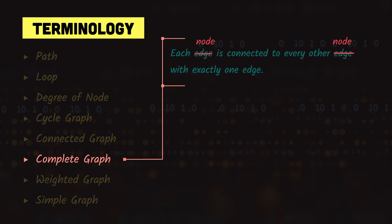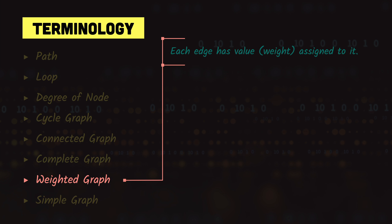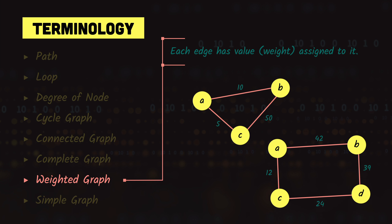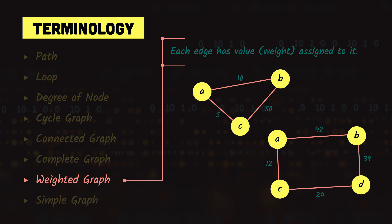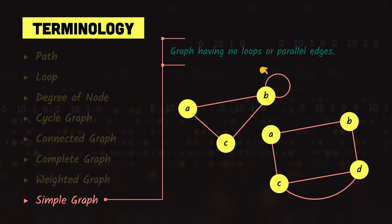A complete graph is one where each node is connected to every other node with exactly one edge. A weighted graph assigns a value or weight to each edge connecting two nodes — instead of ones and zeros, the weight is stored. A simple graph has no loops and no parallel edges. Removing a loop or a parallel edge from a non-simple graph makes it a simple graph.